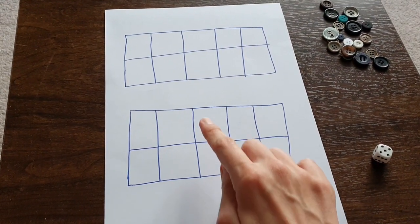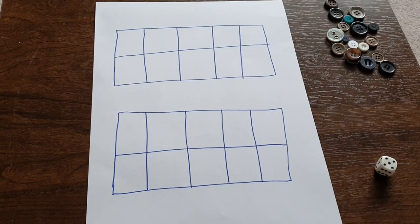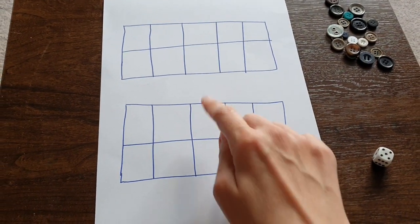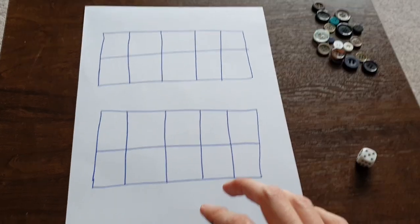What you'll need to do is draw yourself two number frames, ten frames, two ten frames. Two tens we know make twenty, I knew you knew.